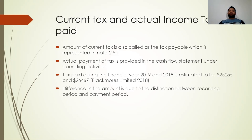The next slide is current tax and actual income tax paid. The assets and liabilities in the balance sheet are recorded on the last date of the balance sheet, and payment is made after finalisation of the accounts. This means that payment will be made after the date of the balance sheet, which is the reason that the amount of tax in a particular accounting period is not equal to the tax payable. The amount of tax payable in 2018 will be equal to the amount of tax paid in 2019.